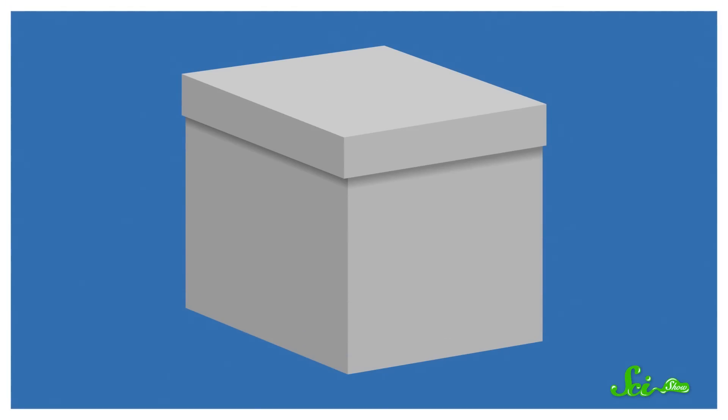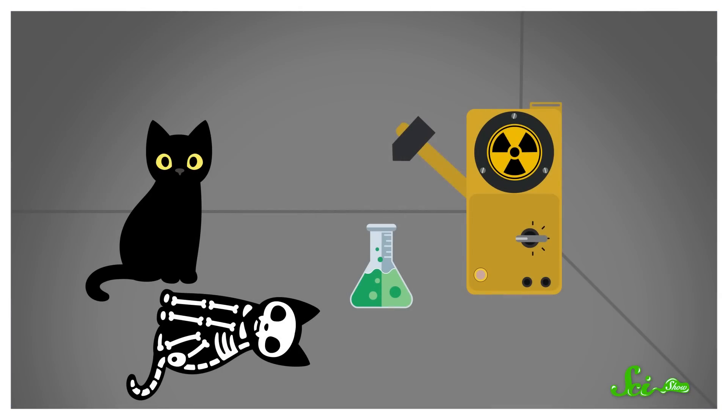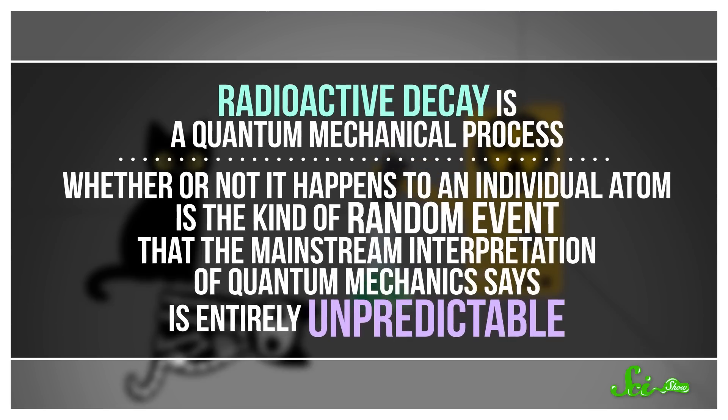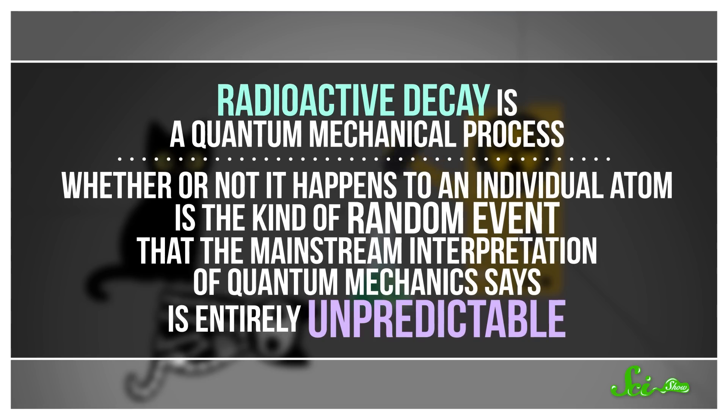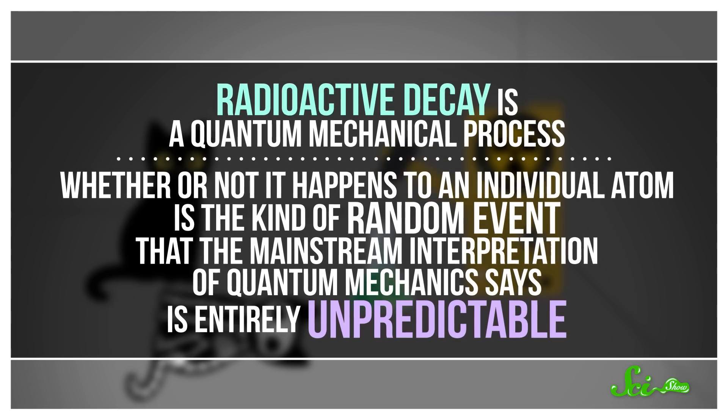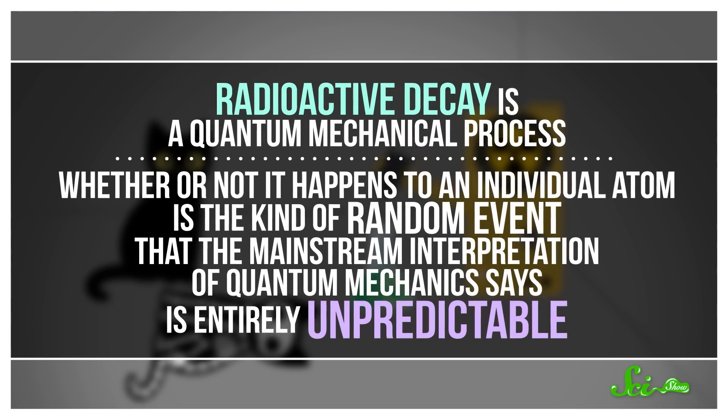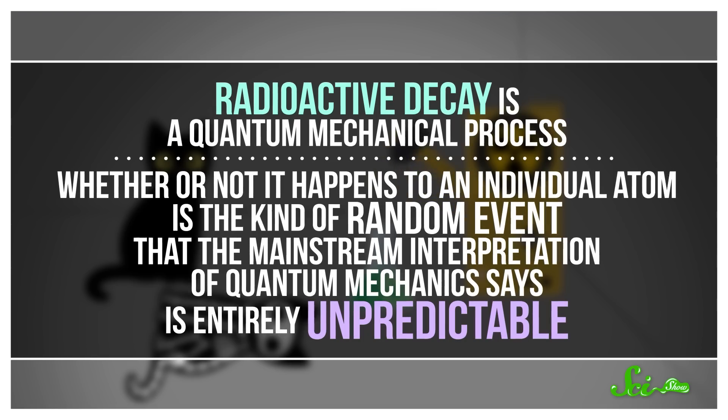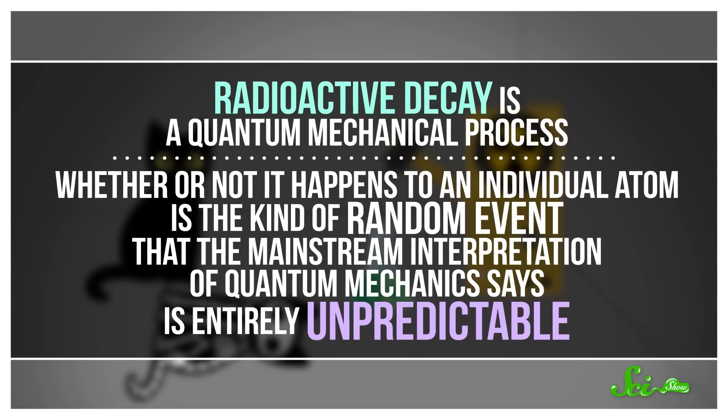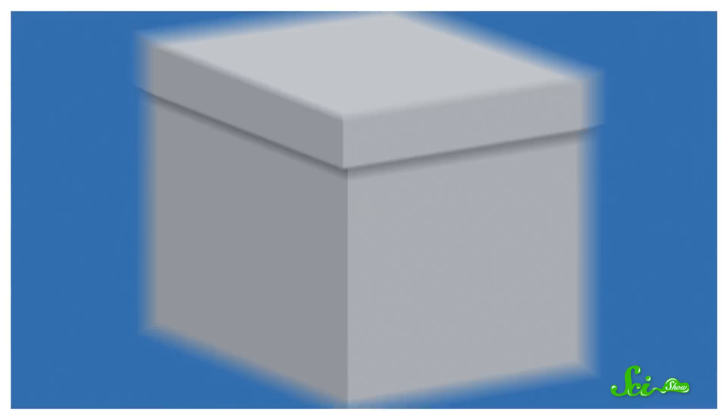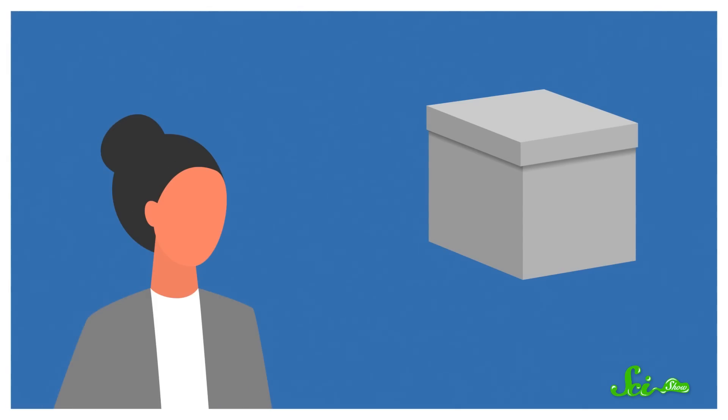In the thought experiment, you hide a cat in a box with a flask of deadly poison. But the poison will only be released if a radioactive atom decays, which has, say, a 50% chance of happening. Radioactive decay is a quantum mechanical process. Whether or not it happens to an individual atom is the kind of random event that the mainstream interpretation of quantum mechanics says is entirely unpredictable. You cannot predict it. Before you open the box, you have no idea whether or not the atom decayed, and therefore no idea whether the poison was released or not.